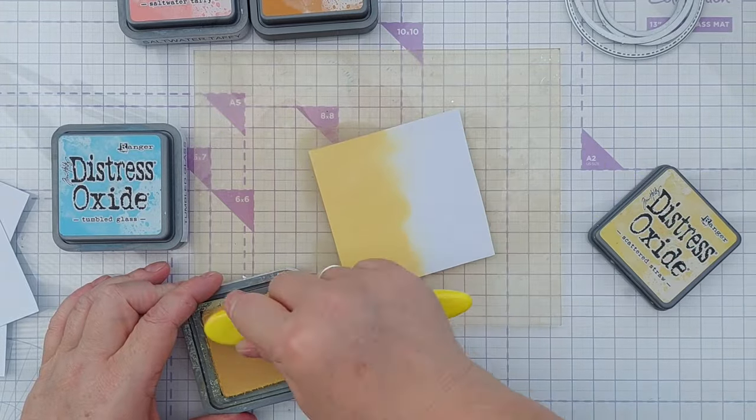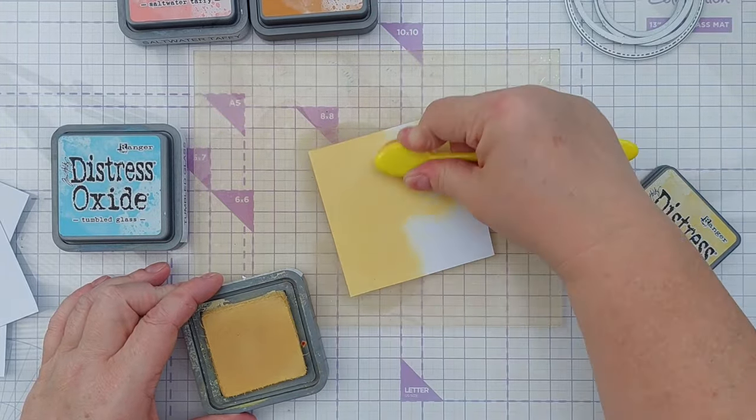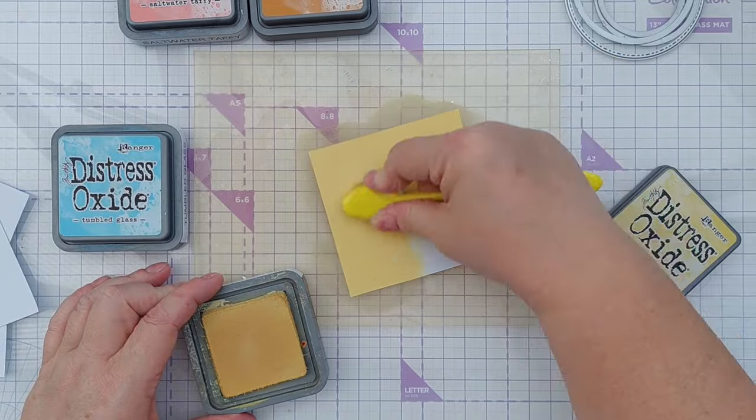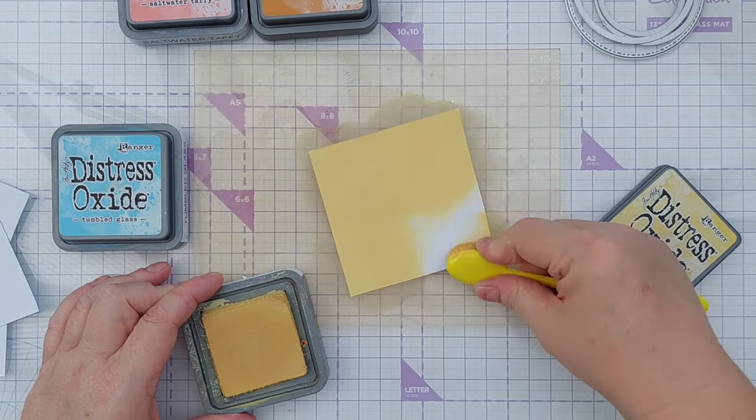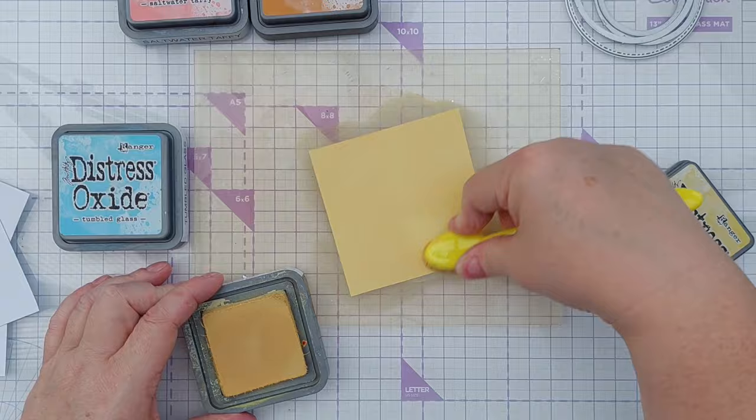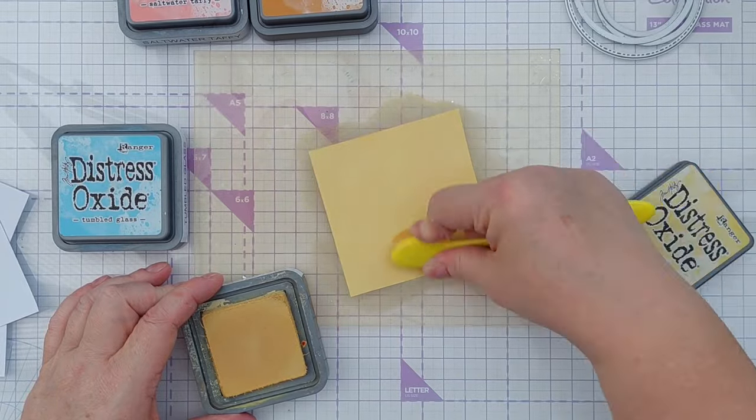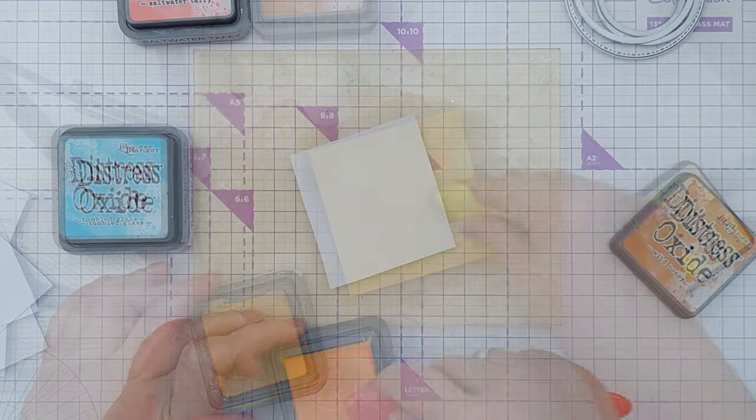I started off with some smooth white card that I placed on my grip mat and inked it up with scattered straw distress oxide. I was looking for a nice smooth blend so I just kept going until I got what I wanted.